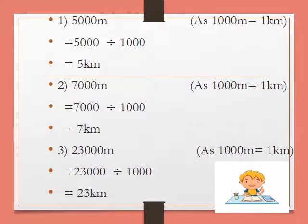See some more examples. 5,000 metres divided by 1,000 — the answer is 5 kilometres. 7,000 metres divided by 1,000 — the answer is 7 kilometres. 23,000 metres divided by 1,000 — the answer is 23 kilometres. In this way, we can convert metres into kilometres.